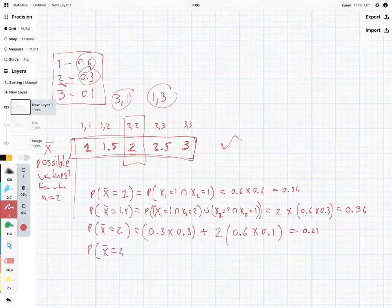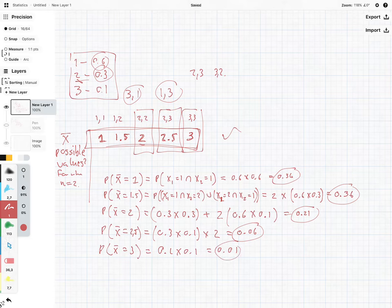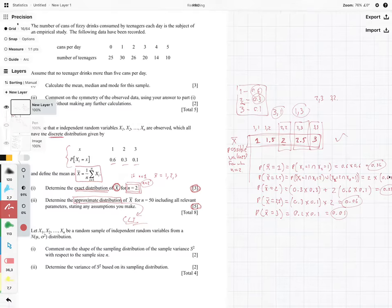The probability that x bar equals 2.5 is the situations where we have 2 and 3, or 3 and 2, which means 2 times 0.3 times 0.1. Hopefully you're starting to see the pattern here. Then the probability that x bar equals 3 is only when both values are 3, which is 0.1 times 0.1, equal to 0.01. We must always add these values together to check they equal 1.